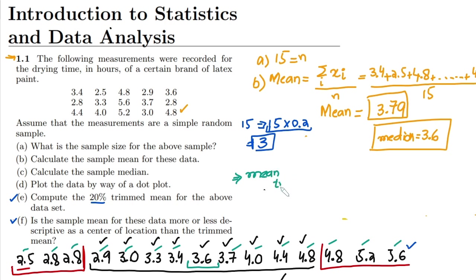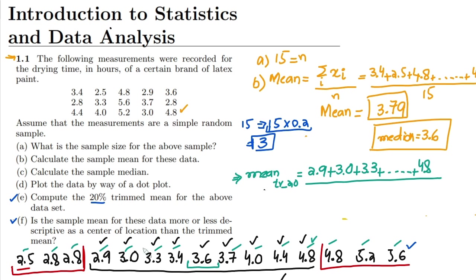The 20% trimmed mean is calculated by adding all the remaining data points: 2.9 + 3.0 + 3.3, and so on up to 4.8 + 4.8 + 4.8, then dividing by the 9 remaining data points. The trimmed mean comes out to 3.68. That is the answer for part e.